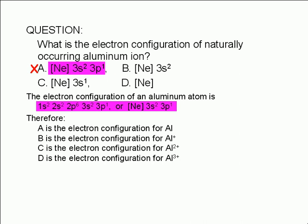If we imagine removing the electron from the 3p subshell of choice A, then we get the electron configuration in choice B. Therefore, choice B is the electron configuration for an aluminum ion with a plus 1 charge.